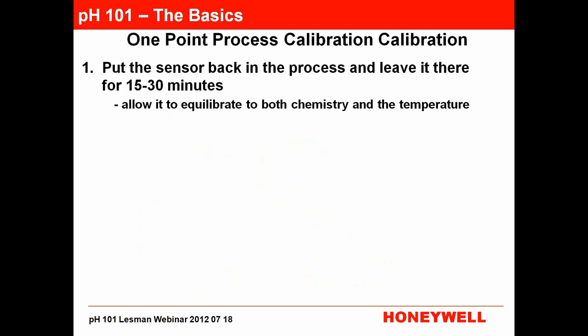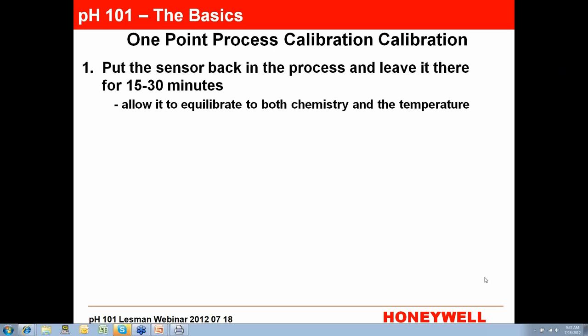To do a one-point process calibration correctly, if you've taken the sensor out and done a two-point calibration, put it back into the process and wait between 30 and 50 minutes — I usually wait 30 minutes — so it can come up to process temperature and equilibrate with the chemistry of the process, so that the liquid junction reaches equilibrium.